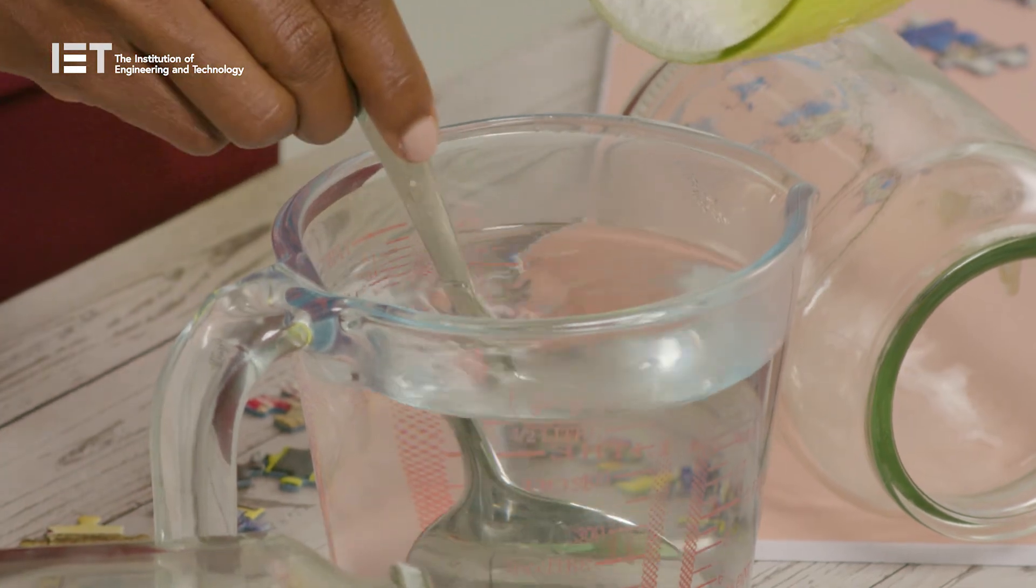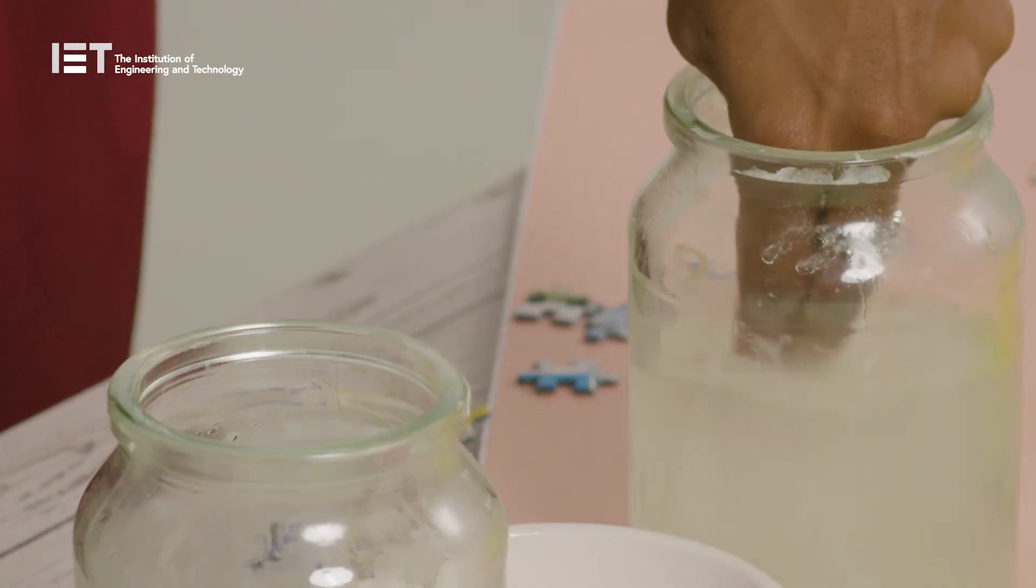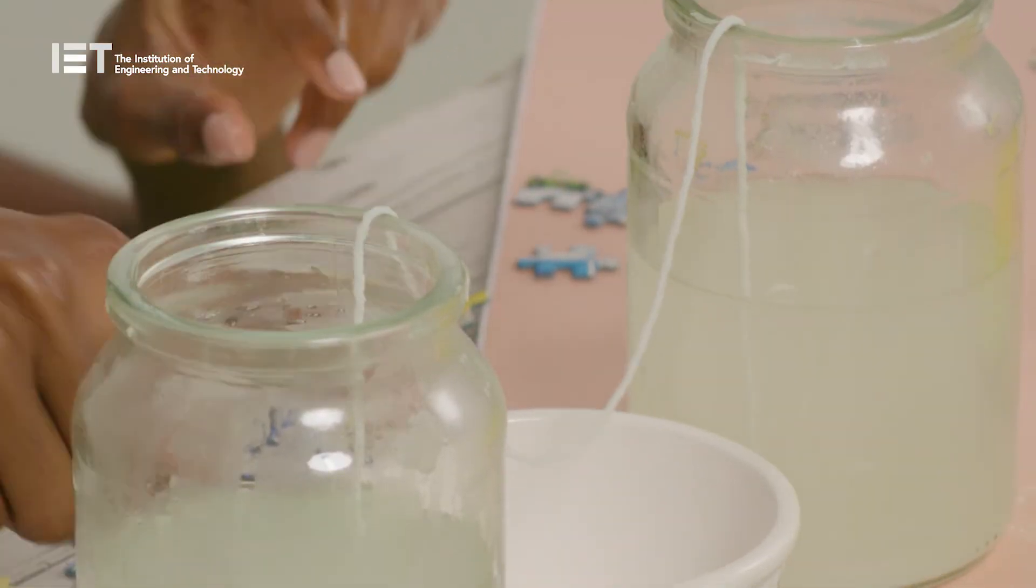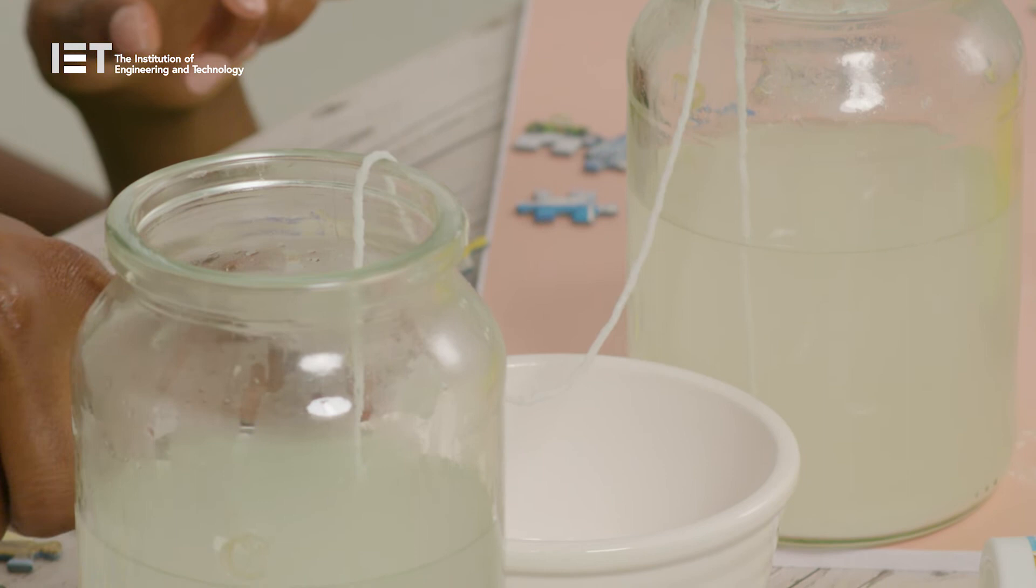When the water moves, the bicarbonate will move with it. We soak the string to make it easy for the solution to travel to the lowest point, where it would drip onto the saucer.